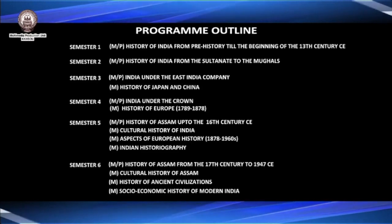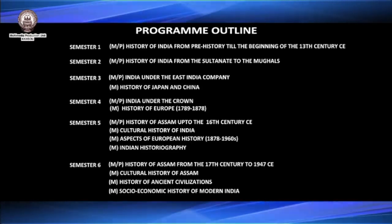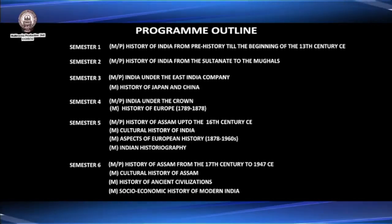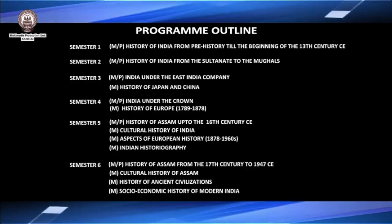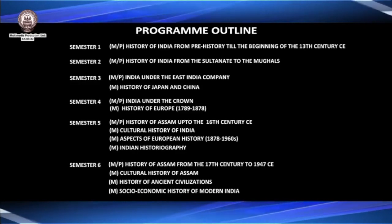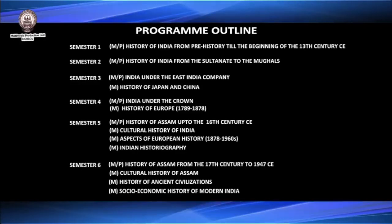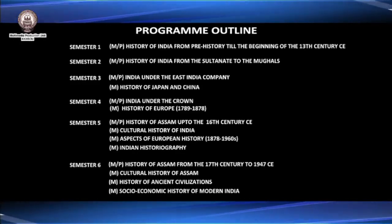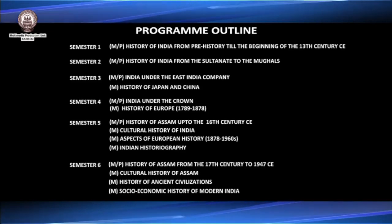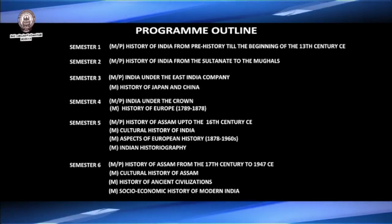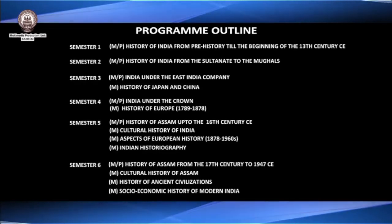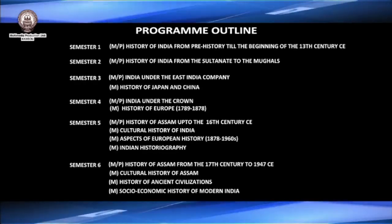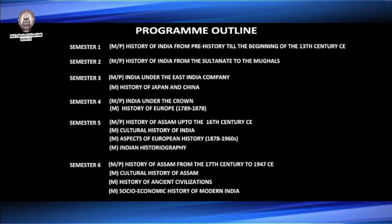Semester five consists of four papers: history of Assam up to the 16th century CE, cultural history of India, aspects of European history 1878 to 1960s, and Indian historiography. The sixth semester consists of four papers: history of Assam from the 17th century to 1947 CE, cultural history of Assam, history of ancient civilization, and socio-economic history of modern India.